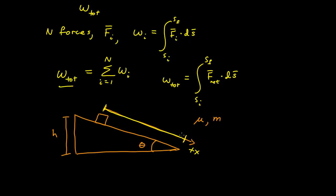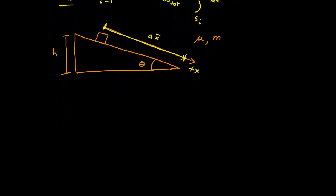All my motion is one-dimensional along the incline, so I want to define that to be my x-axis. I can define my displacement vector going from my initial position to my final position. First, let's identify all the forces on the object.